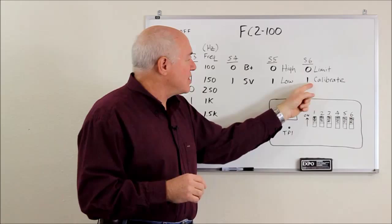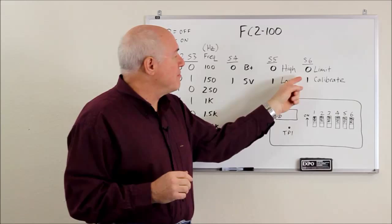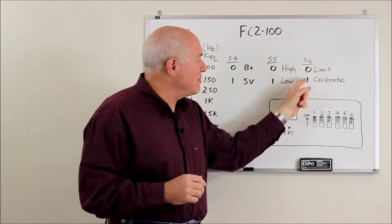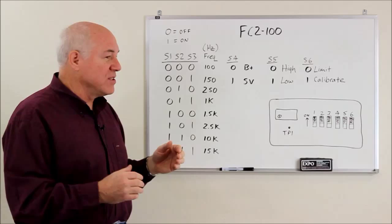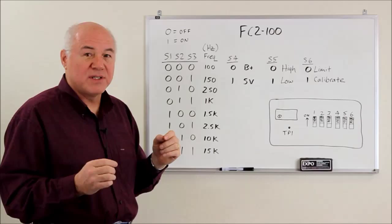And then switch six can be used to select whether you want to do limiting, like a voltage clamp limits. The frequency will clamp if you put it on a limit. Or if you turn on switch six, one meaning on, you switch over into calibrate mode. So now what we can do is adjust how we shift frequency. And this can be used to calibrate speedometer signals with different size tires, for example, so that if the pulses are going zero to 100 hertz,